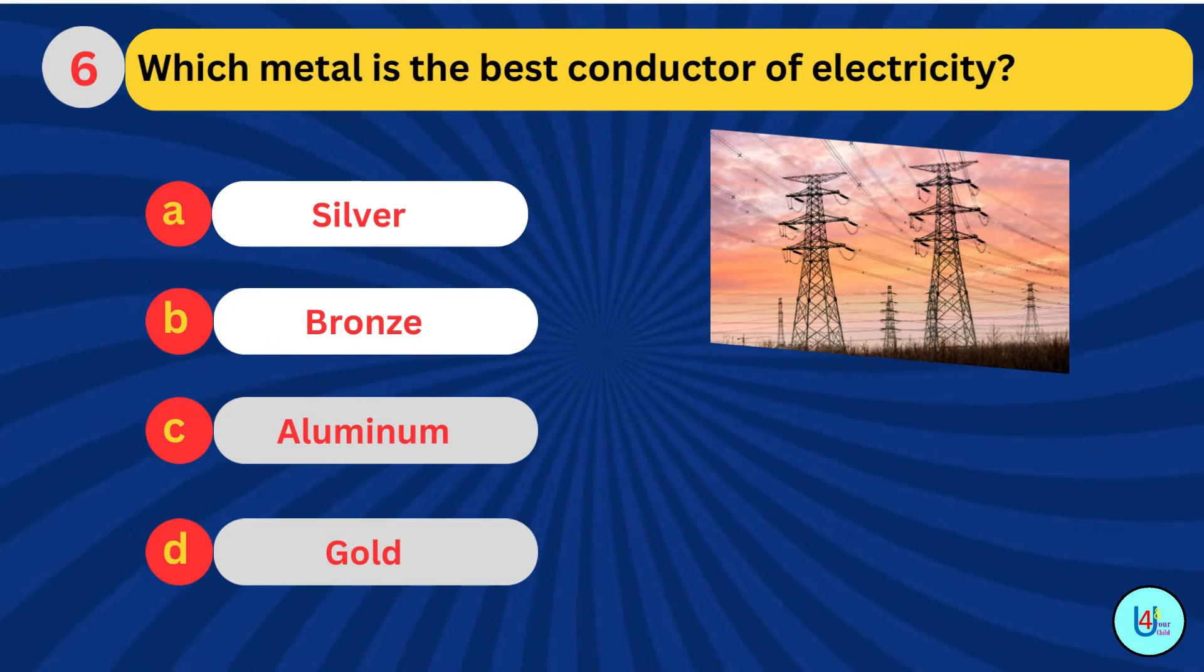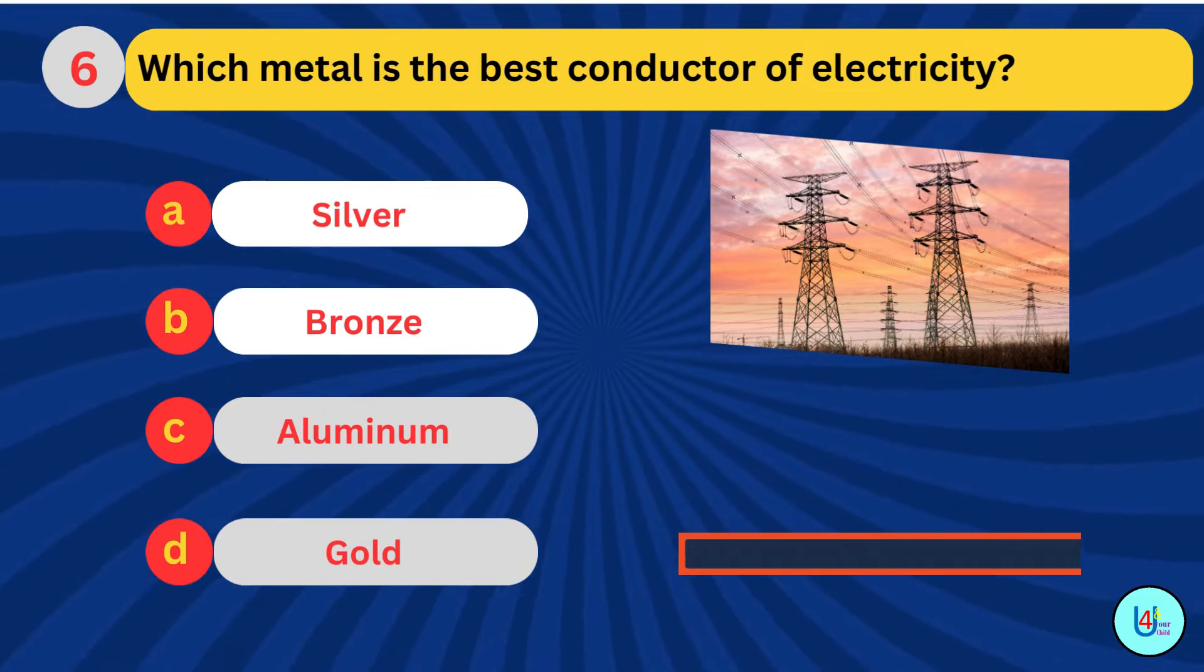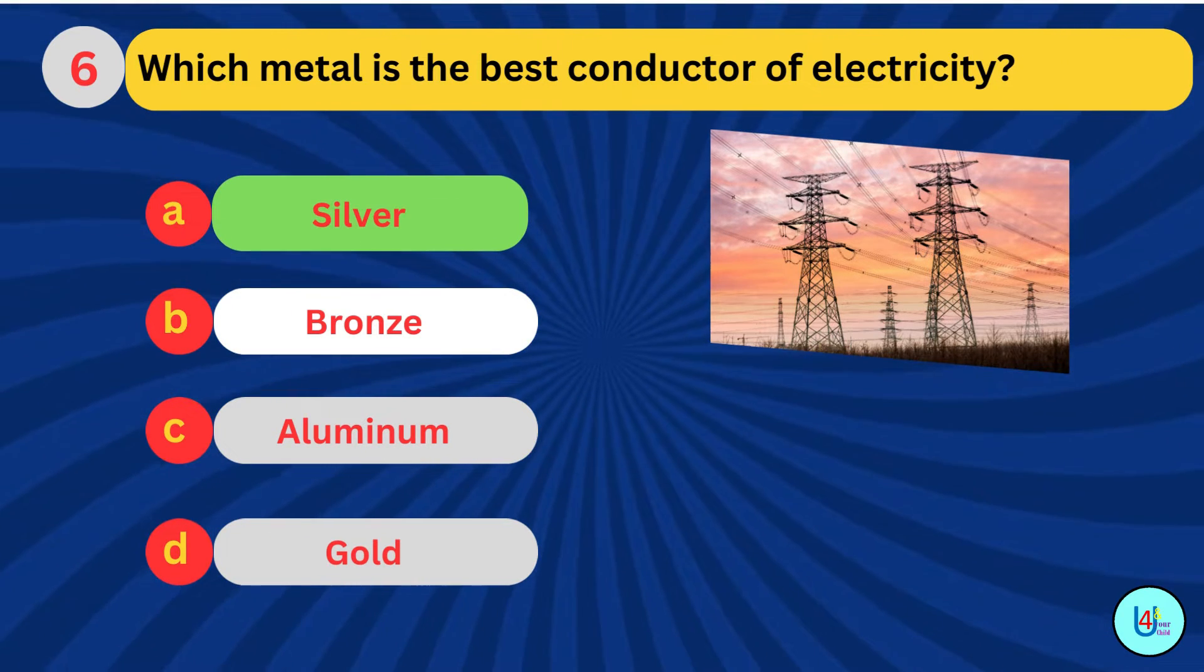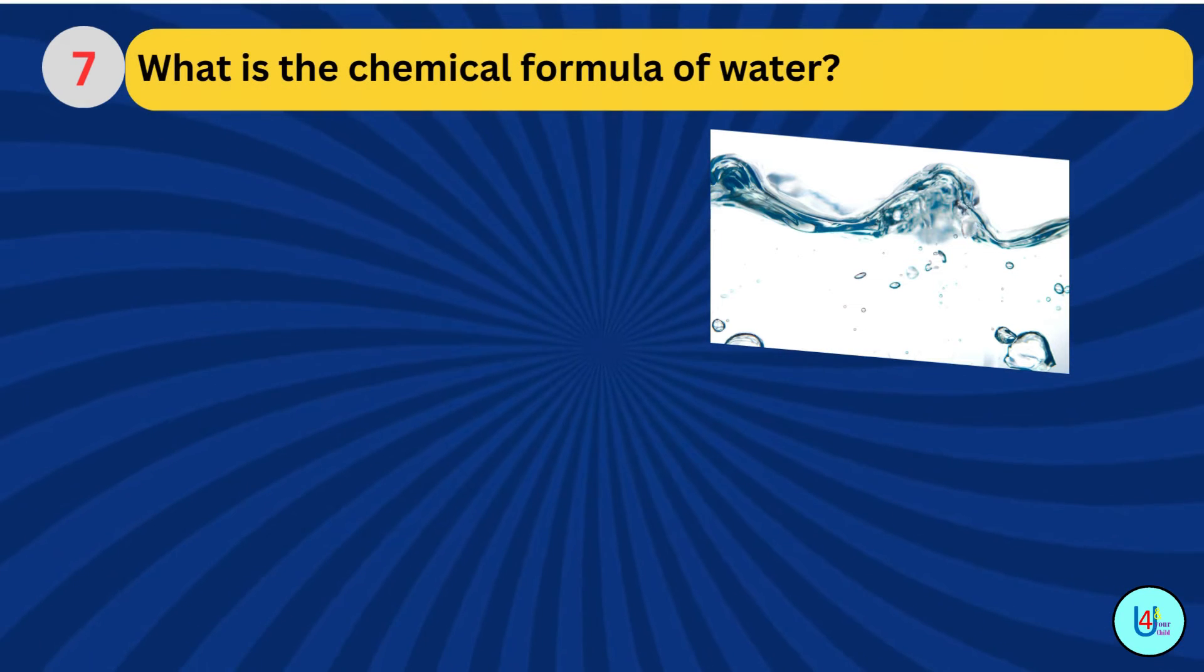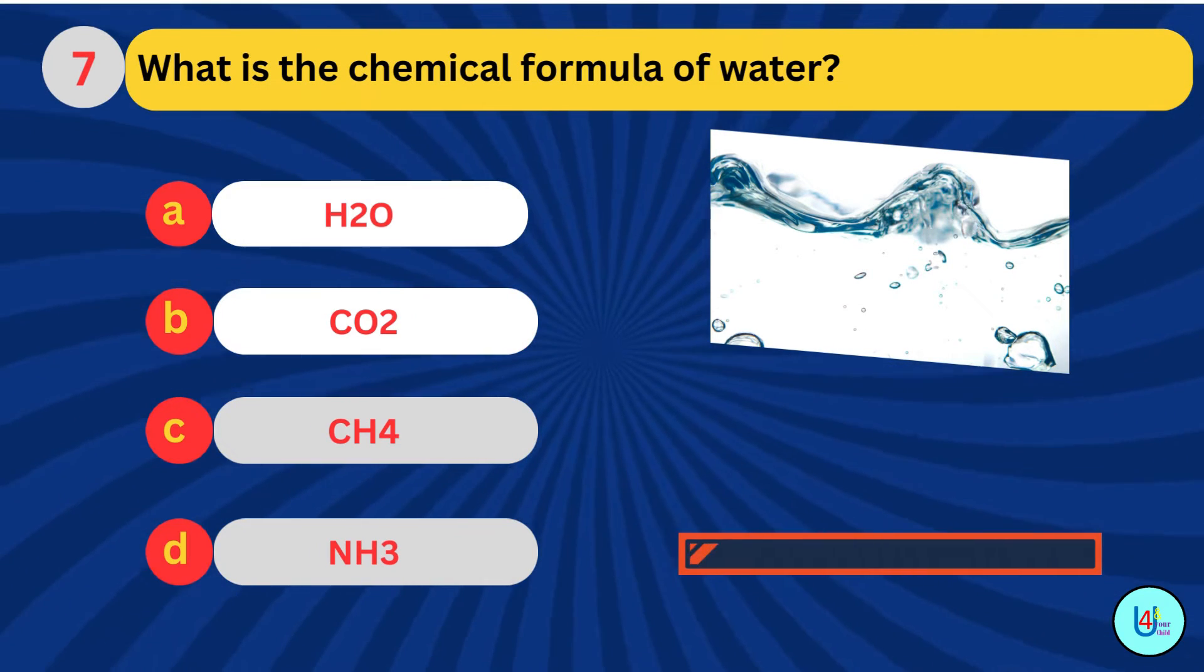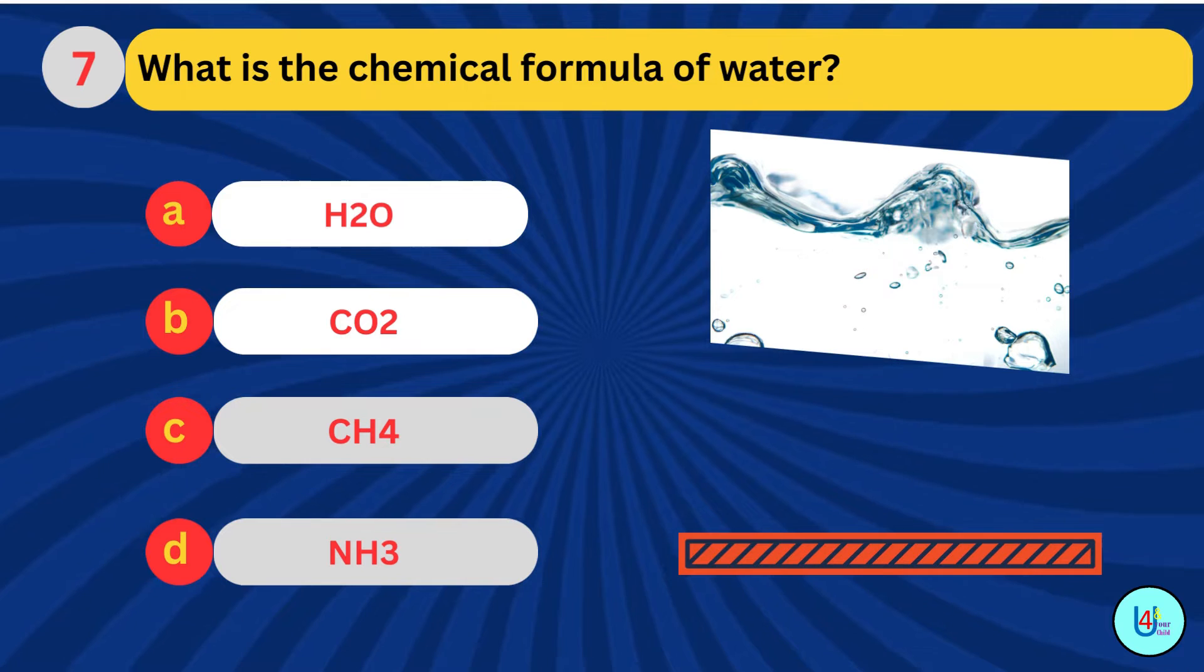Which metal is the best conductor of electricity? Silver. What is the chemical formula of water? H2O.